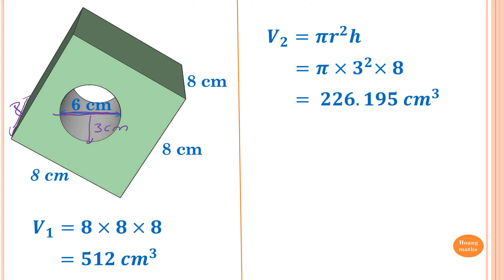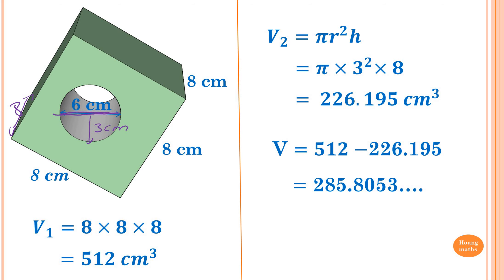To find the volume of the solid, we use the volume of the cube minus the volume of the cylinder. Therefore the answer is 285.8053 and so on, which rounds to 285.8 cubic centimeters.